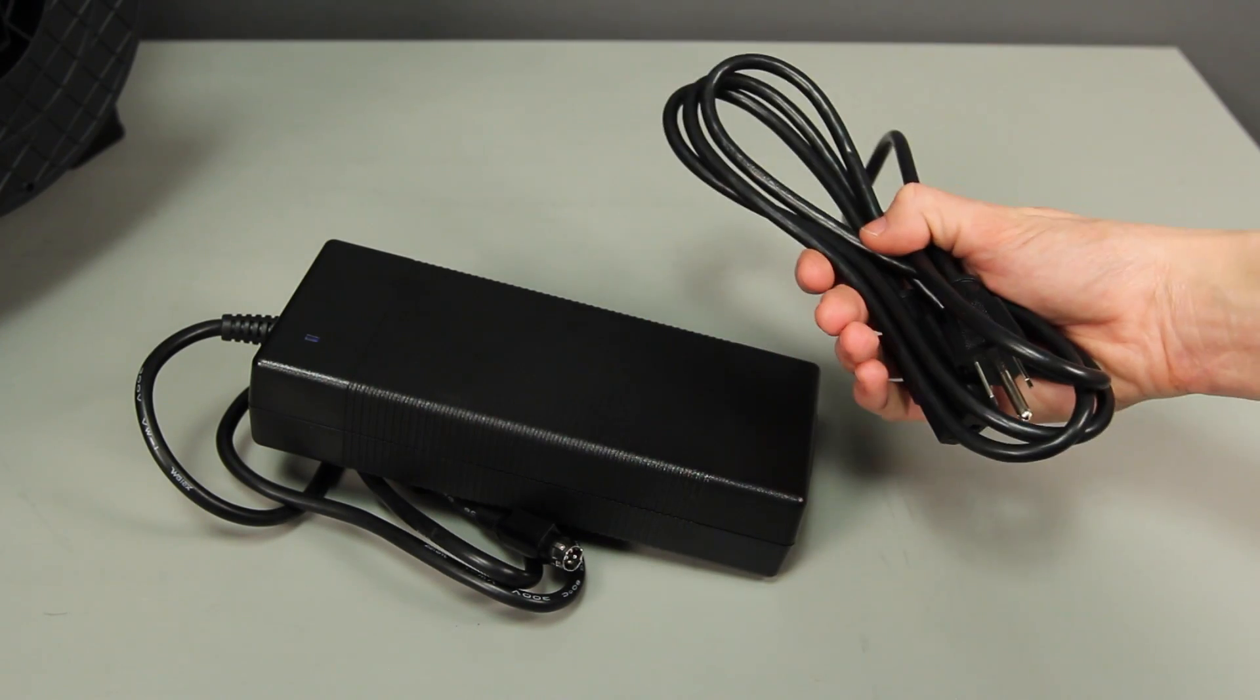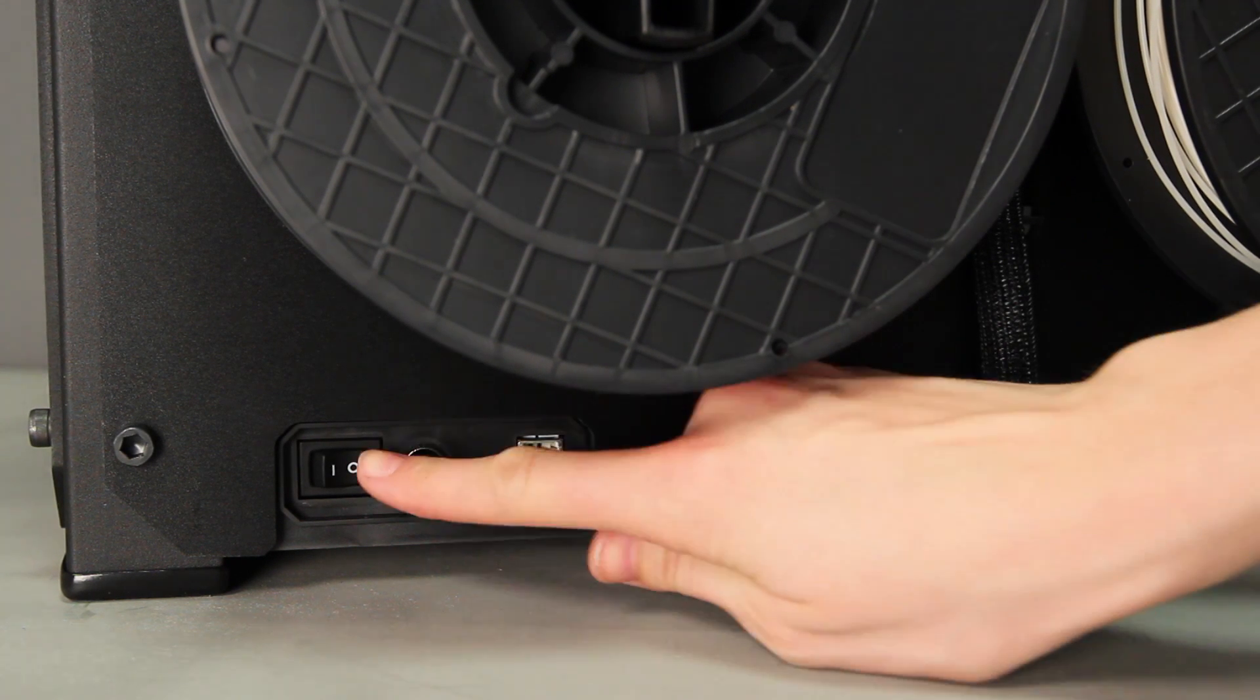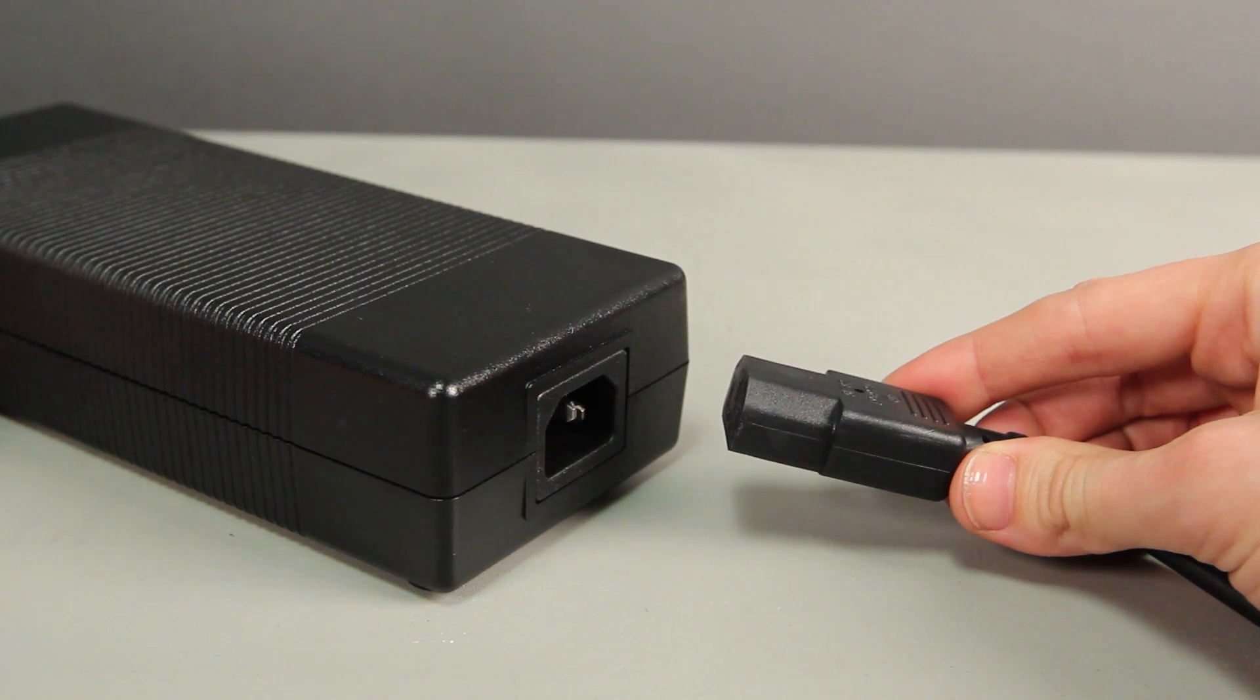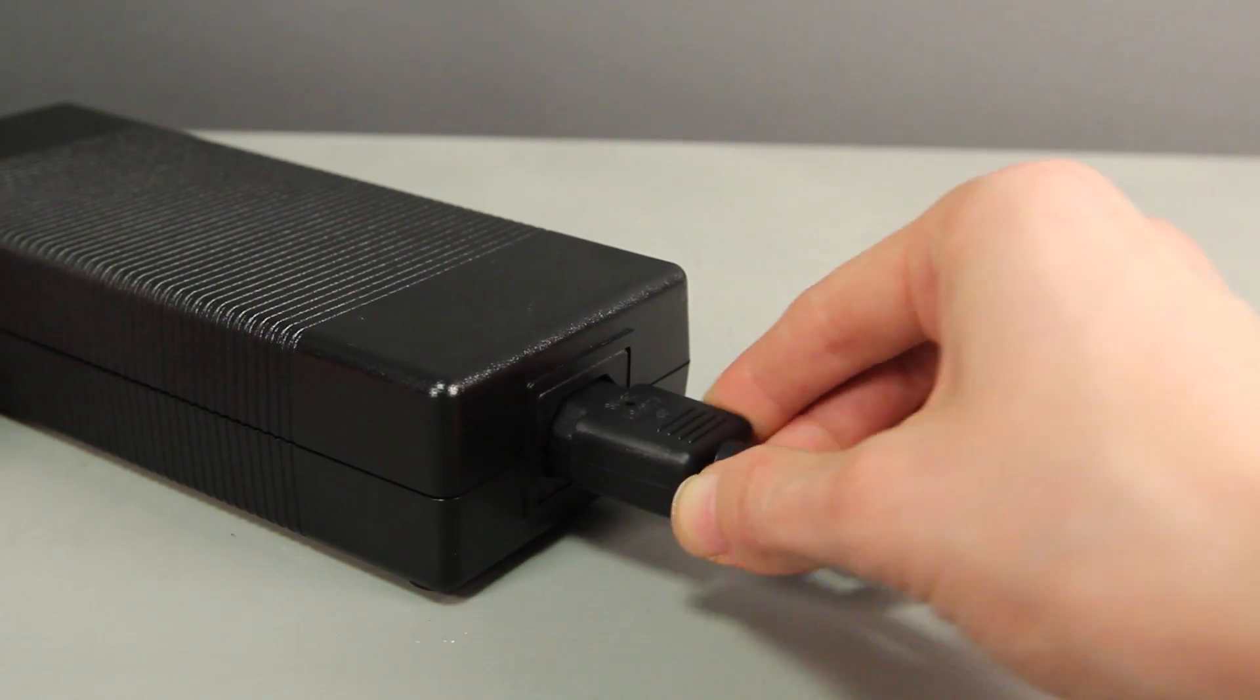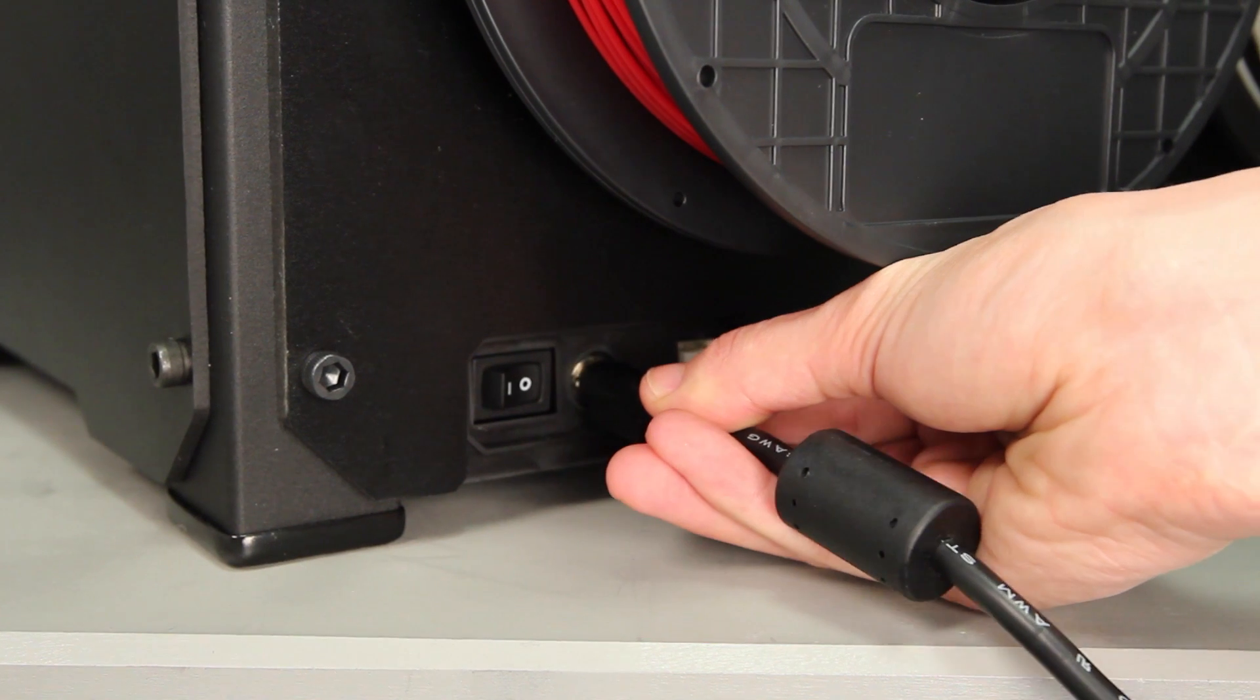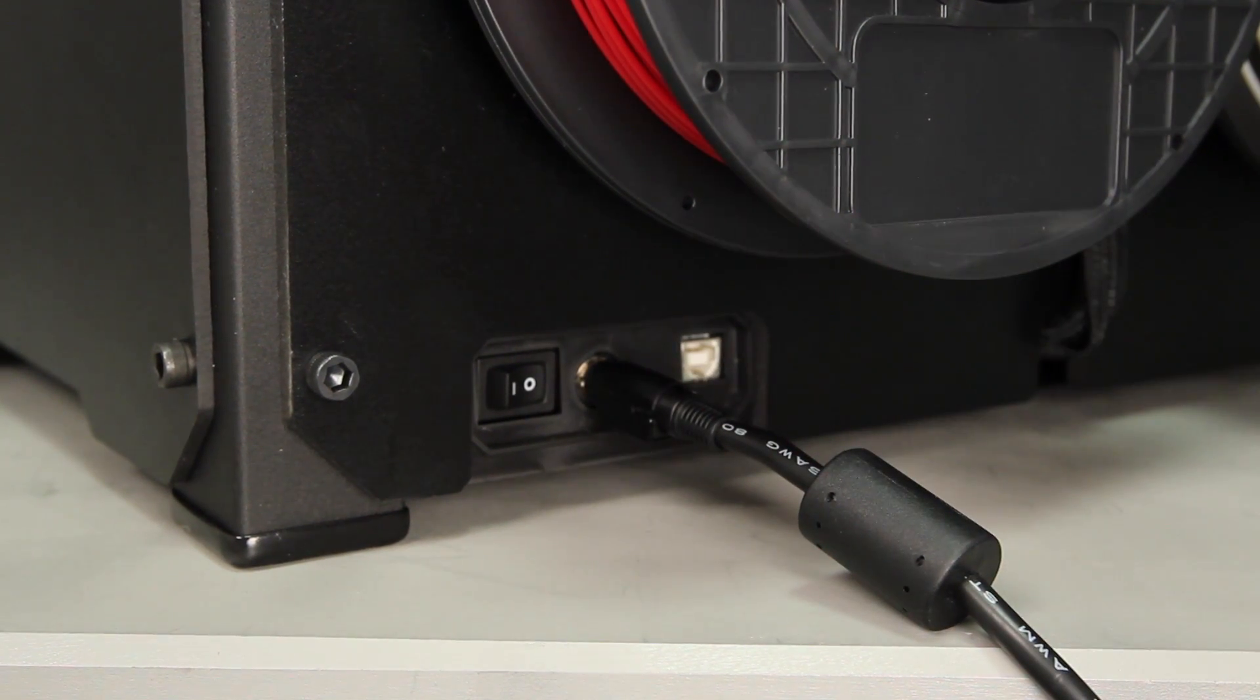The last step in the unboxing process is to get some power to your MakerBot Replicator 2X. Locate the power supply and cable and ensure that the power switch on the back of your MakerBot Replicator 2X is set to off. Attach the cable to the power supply and insert the power cord into the port on the back of your MakerBot Replicator 2X with the flat side facing down.